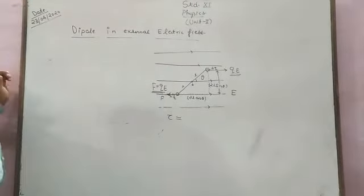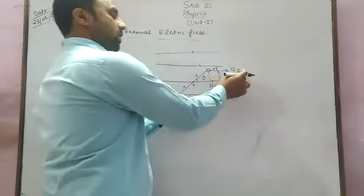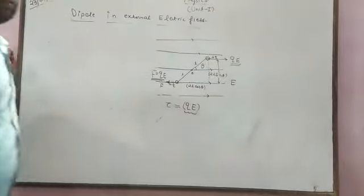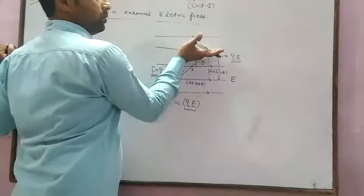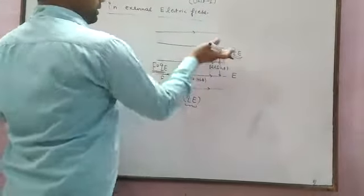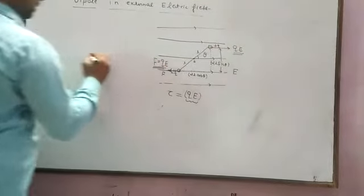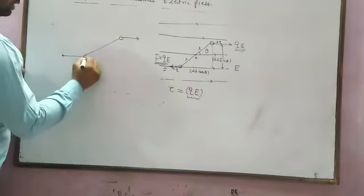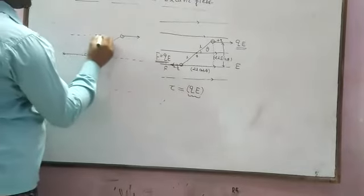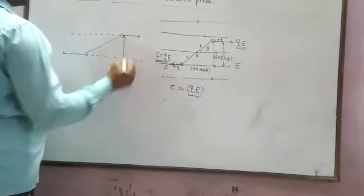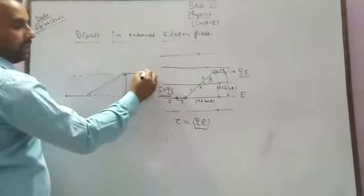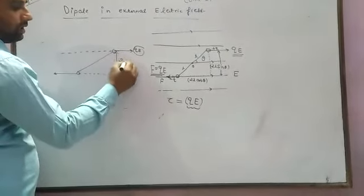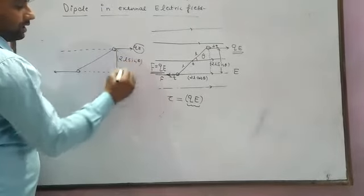We know the formula for torque: tau is equal to force into perpendicular distance. The force acting is Q into E. The perpendicular distance is the distance between the two parallel forces. When the couple is formed, the distance between the two parallel forces is 2L sin theta.